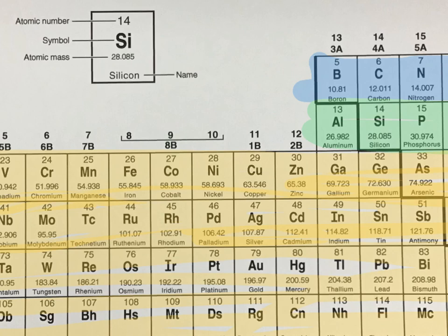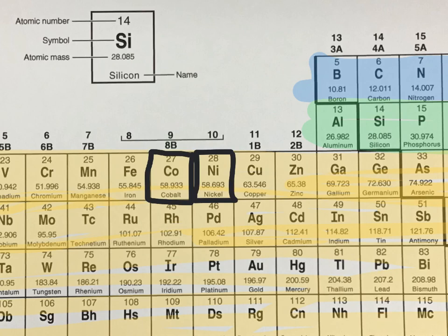The periodic table is not arranged by increasing atomic mass. If you notice, number 27 cobalt has an atomic mass of 58.993. Nickel, right next to it, has an atomic mass of 58.693. If we were to arrange the periodic table by increasing atomic mass, nickel would actually go before cobalt.